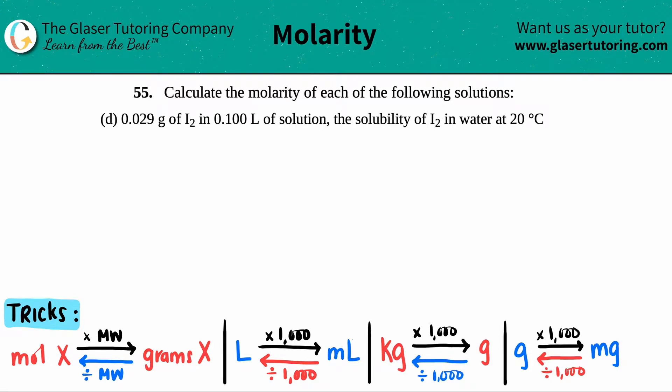Number 55: Calculate the molarity of each of the following solutions. For letter D, they gave us 0.029 grams of iodine, I2, in 0.1 liters of solution. This is actually the solubility of iodine in water at 20 degrees Celsius. Let's find the molarity.